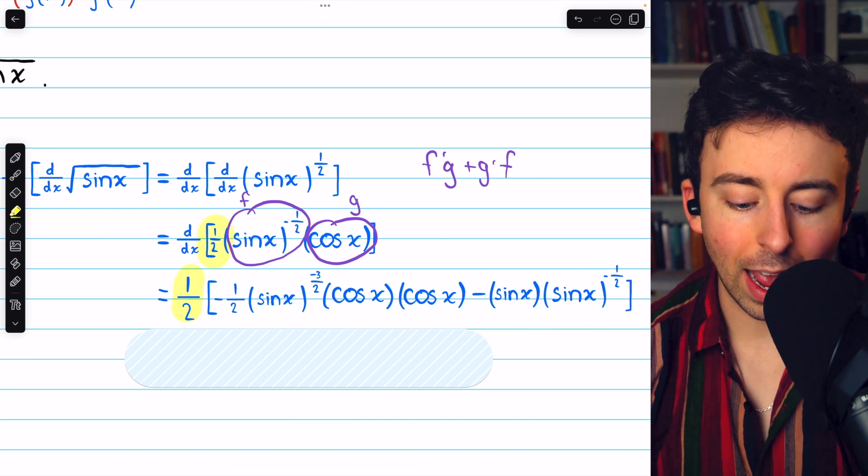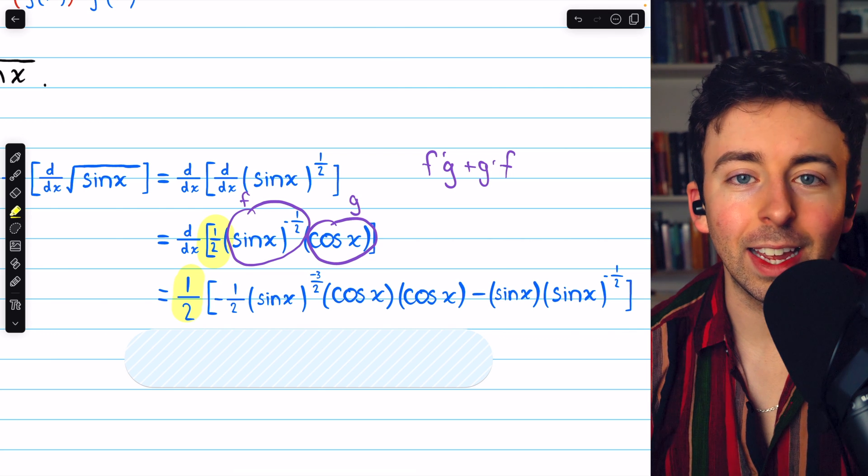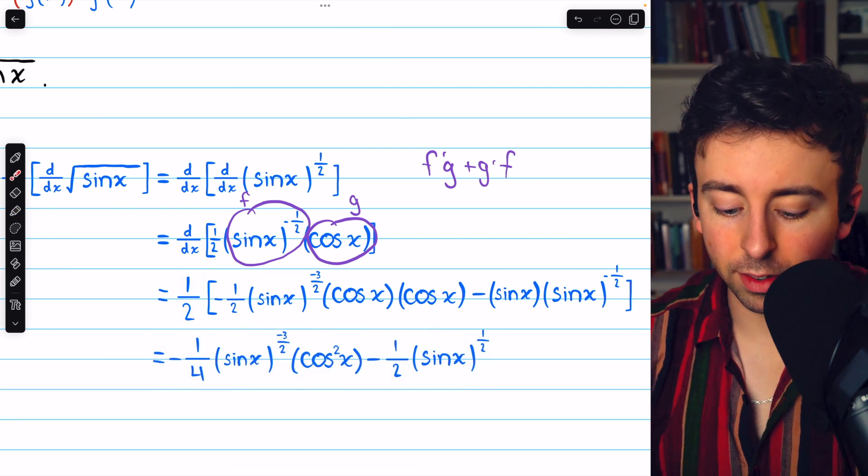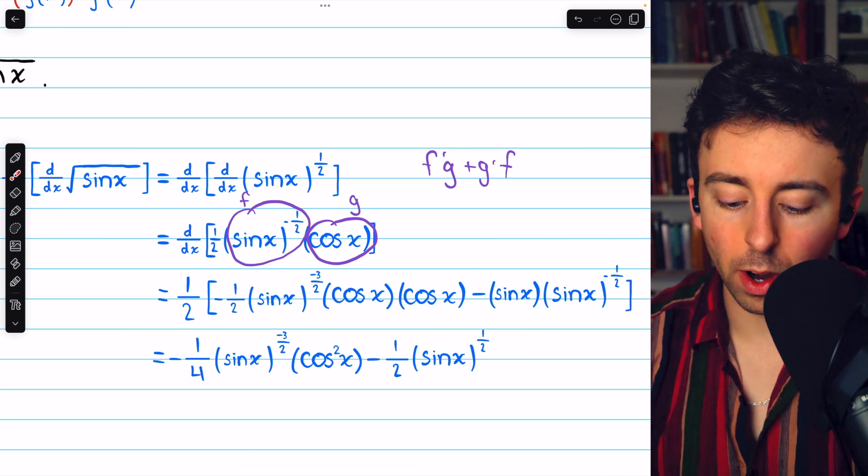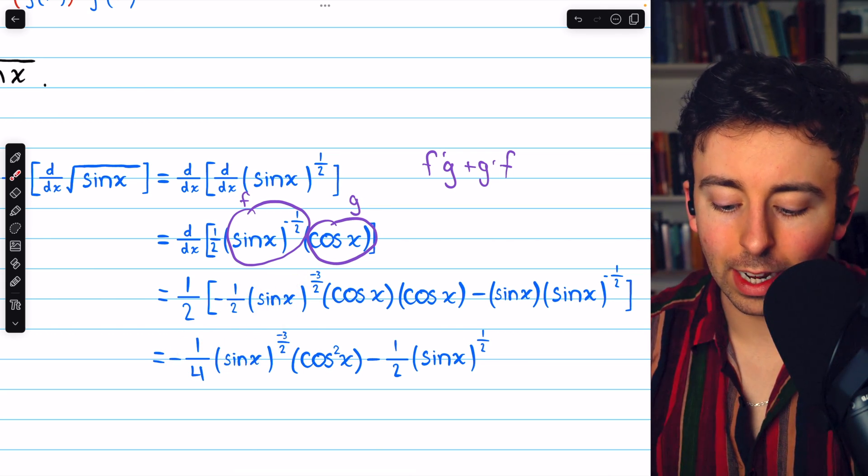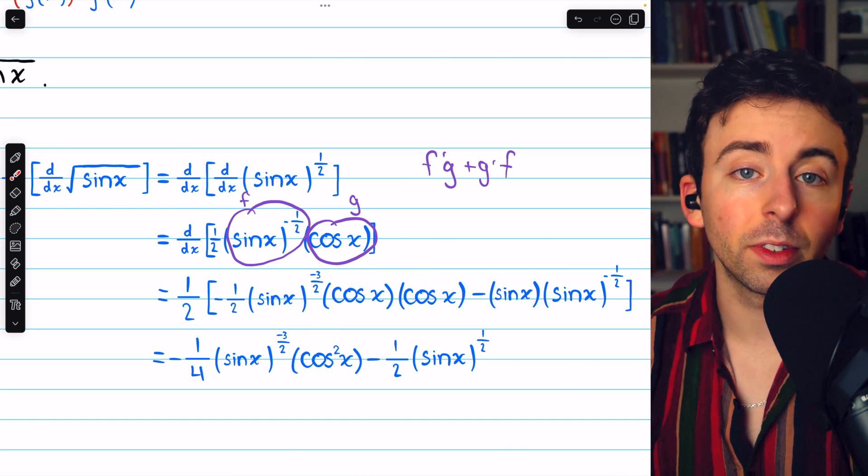And note how we have that factor of one-half sitting outside the brackets. So now we'll have to distribute that and do some simplification. And that brings us to this final answer. One-half times negative one-half is negative one-fourth. Then we have sine x to the negative three-halves, and cosine times cosine gives us that cosine squared.